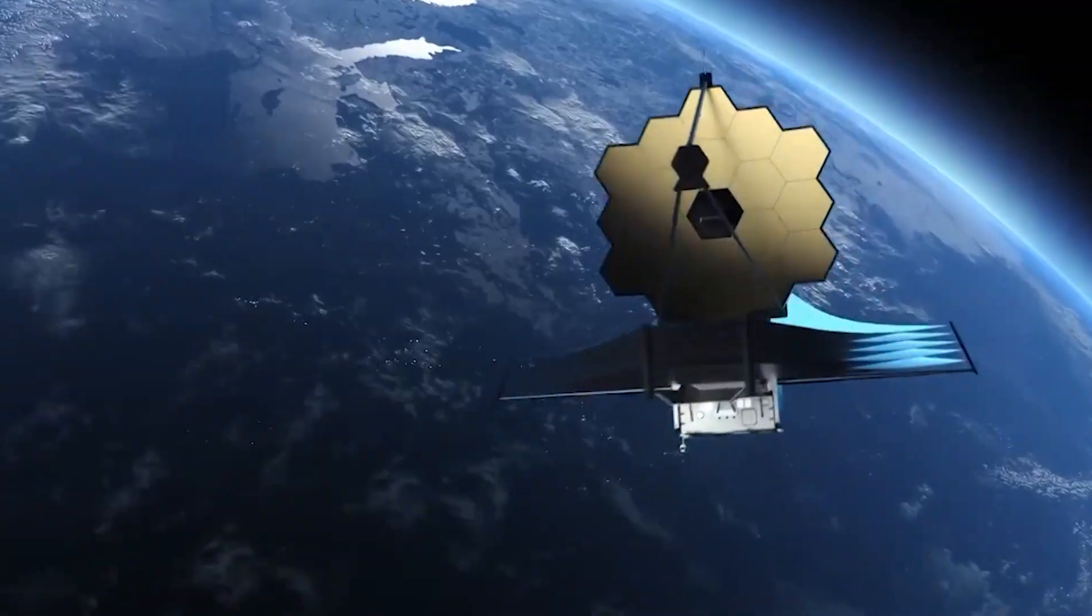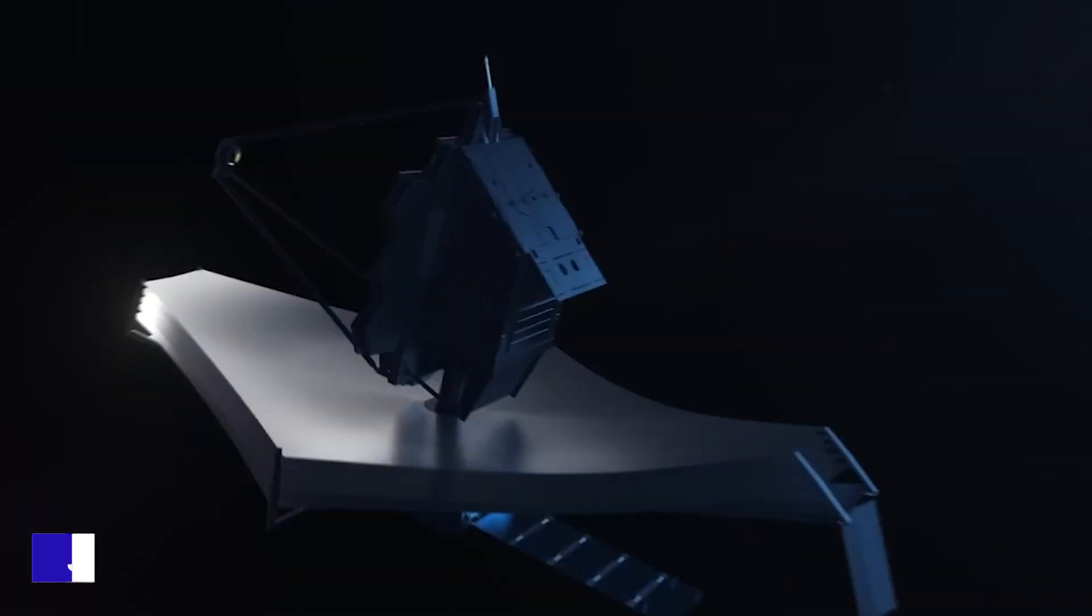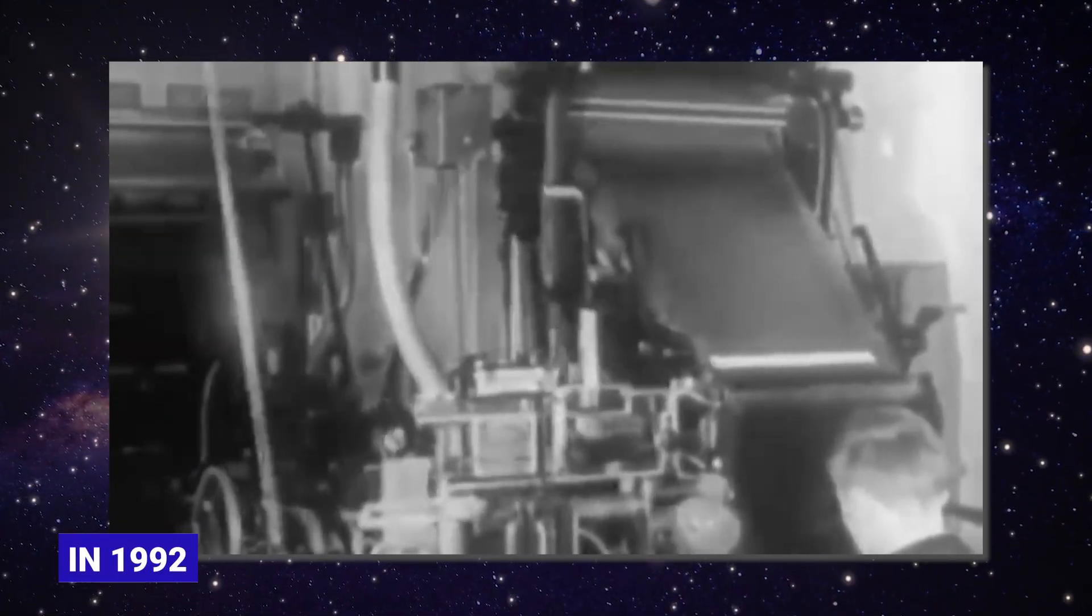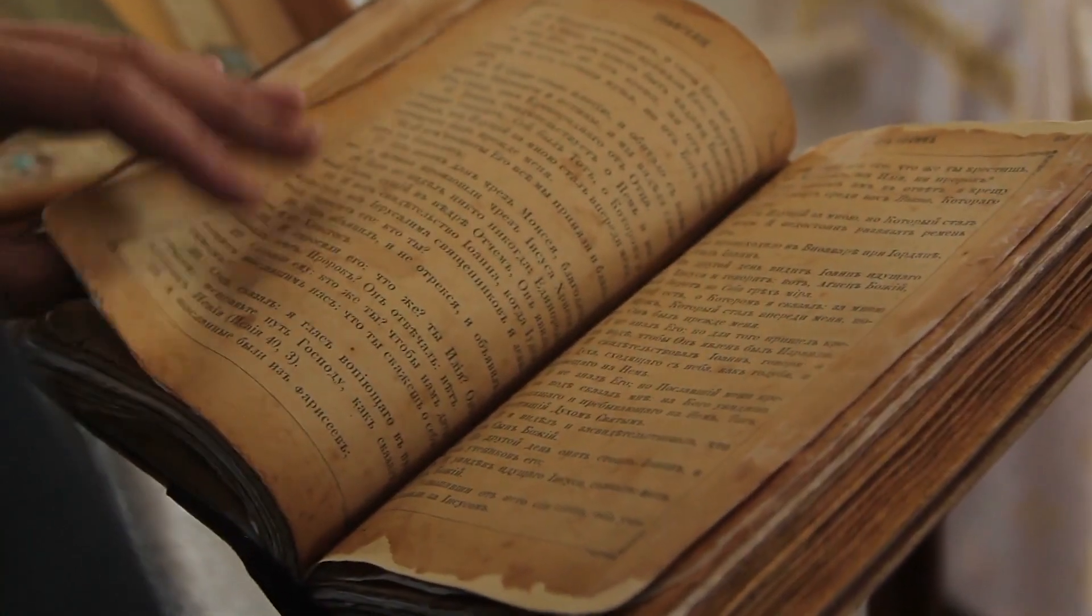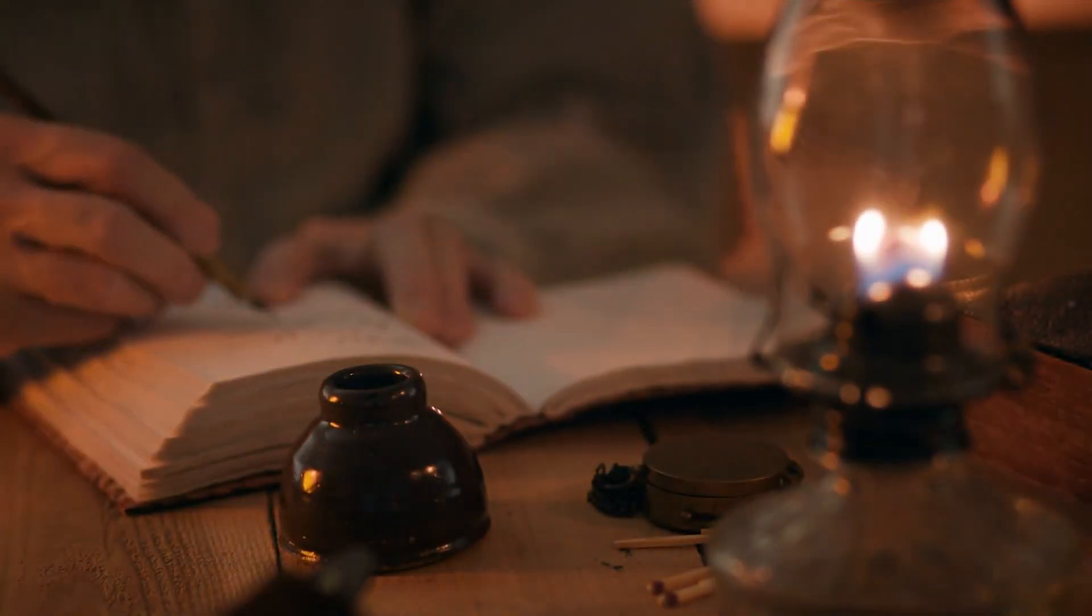Ever since it was first pointed out by Georges Lemaitre nearly a century ago, no one really expected the James Webb Space Telescope to contribute to the debate. Physicist Eric J. Lerner is the author of a book called The Big Bang Never Happened, published in 1992, and his argument speaks for itself. I mean, writing an entire book about an idea with that simple a name shouldn't be any harder to understand than the color of a tomato. You get what I mean, right?